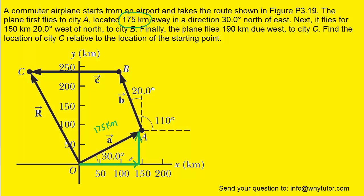To find the X component, we take note that it is adjacent to the 30-degree angle, and therefore we can use cosine. Specifically, it will become 175 times the cosine of 30. Since it's pointing to the right, we will call it positive. The Y component is opposite to the 30-degree angle, so we will be using sine — 175 times the sine of 30 degrees. The Y component is pointing straight up, so it too will be positive.